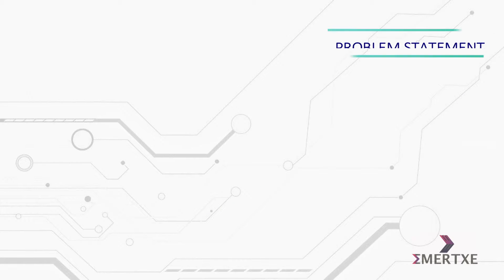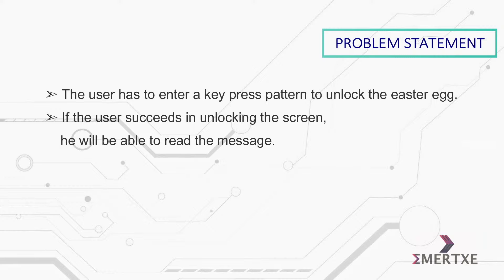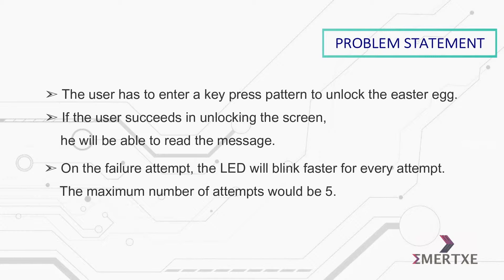In this assignment, you have to implement an 8-field password access to the screen. The user has to enter a keypress pattern to unlock the Easter egg. If the user succeeds in unlocking the screen, he will be able to read the message. On a failure attempt, the LED will blink faster for every attempt. The maximum number of attempts would be 5.